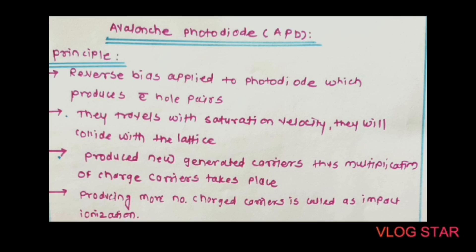These carriers travel with their saturation velocity and collide with the lattice. New electron-hole pairs are generated which travel along with the initial carriers, thus multiplication of charge carriers takes place, which increases the current. This process of generating a greater number of charge carriers is called impact ionization — this is the key process for the avalanche photodiode.